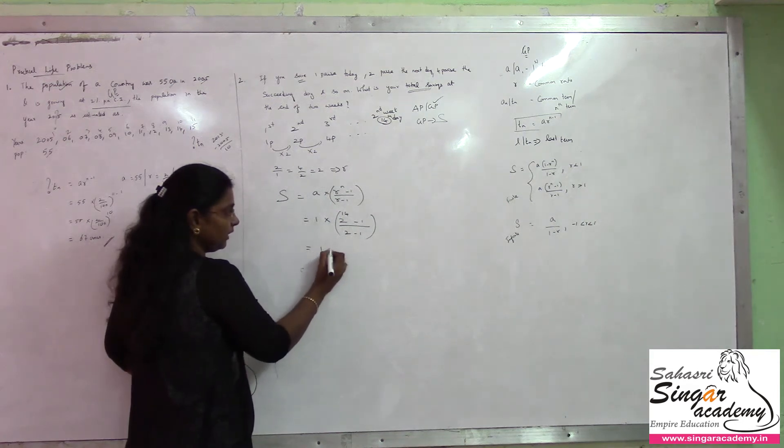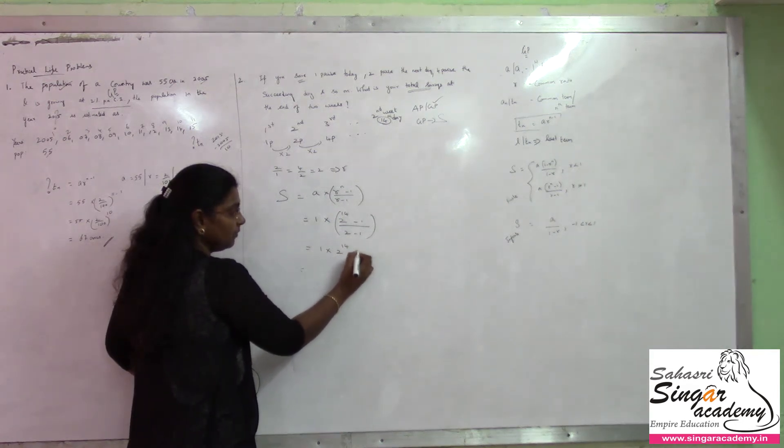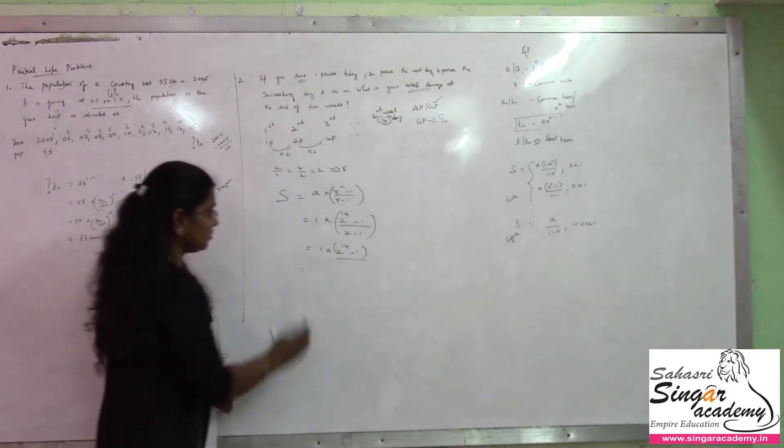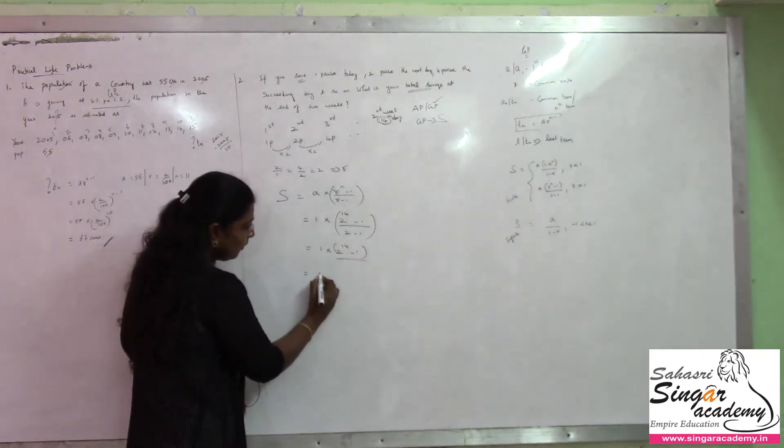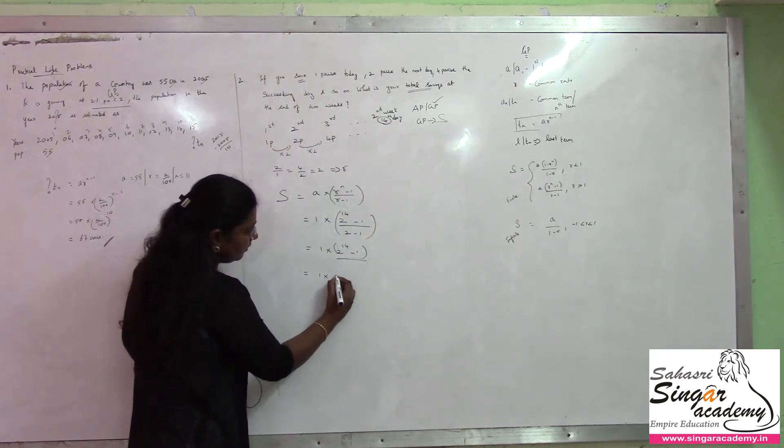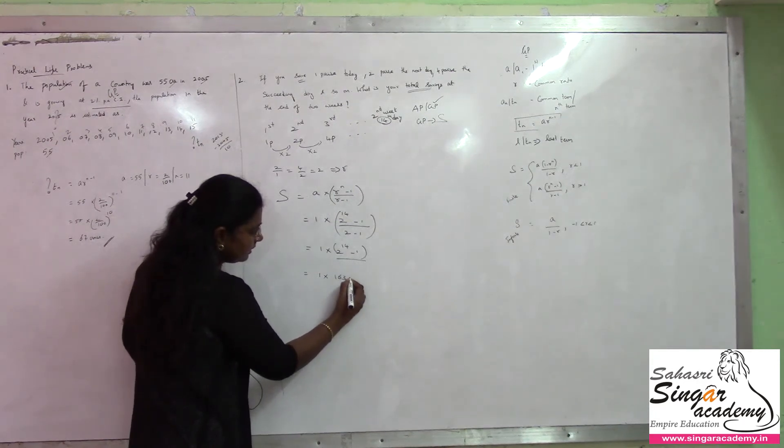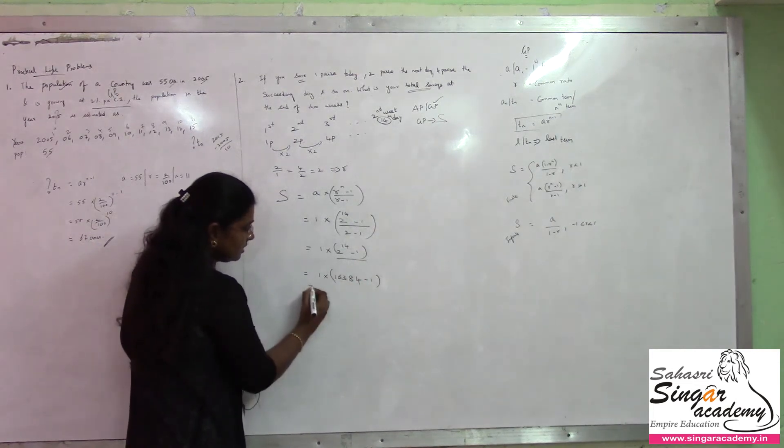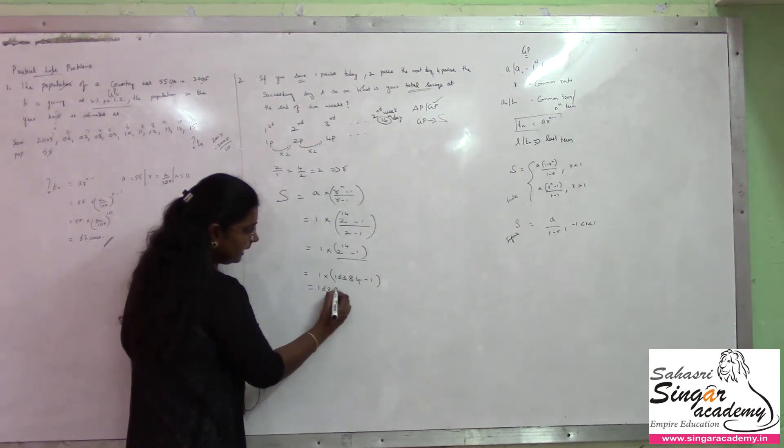Okay. So, this is 1 into 2 power 14 minus 1 divided by 2 minus 1 is 1. So, I am just leaving this one. Is equal to 1 into 2 power 14 will be 16384 minus 1. So, this is 16383.